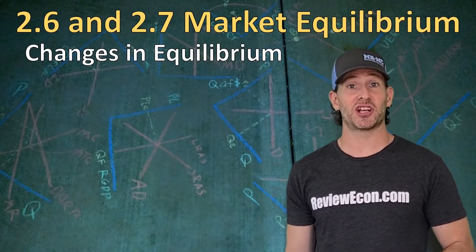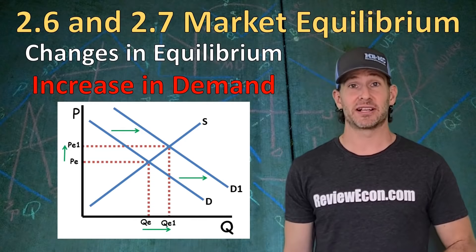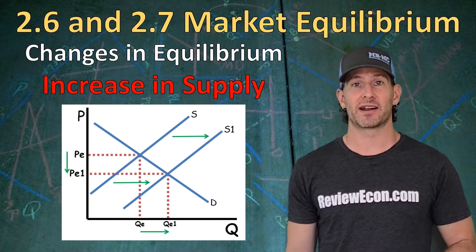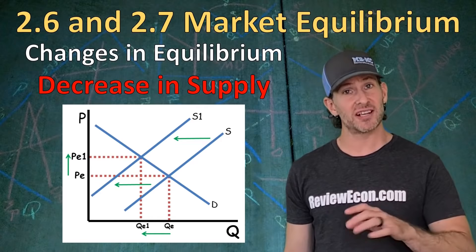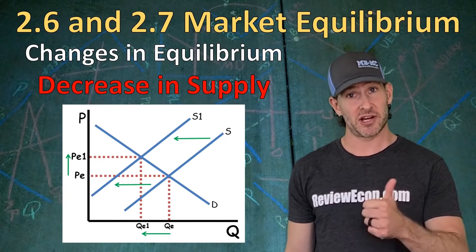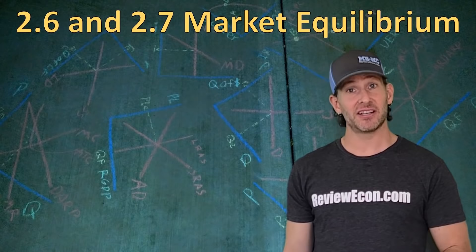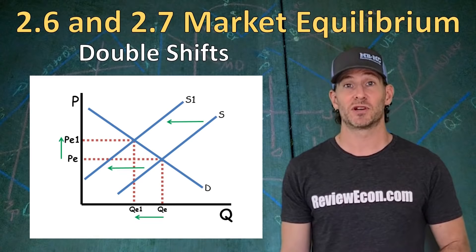The equilibrium price and quantity can change when there's a shift in either demand or supply. An increase in demand causes equilibrium price and quantity to both increase. A decrease in demand causes both to decrease. An increase in supply causes equilibrium price to decrease and quantity to increase. A decrease in supply causes price to increase and quantity to decrease. When in doubt, just graph it out. Most of the time one variable changes and one curve shifts; occasionally two variables change, causing two curves to shift.